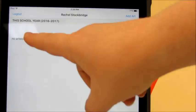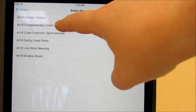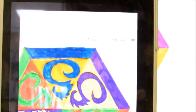Right now it shows me it's having no art. You'll go up here in the corner and say add art. You will now see a list of projects. I'm going to choose the complementary color wheels to start.